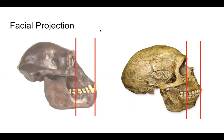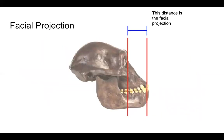The next trait is facial projection. A flatter face is better for an upright posture and allows for a larger cranium, which corresponds with a larger brain. To measure facial projection, we use a side view of the skull and measure the difference between the supraorbital brow ridge and the front of the upper jaw — just where that upper jaw bone ends. Organisms with a smaller facial projection probably had more upright posture and larger brains.